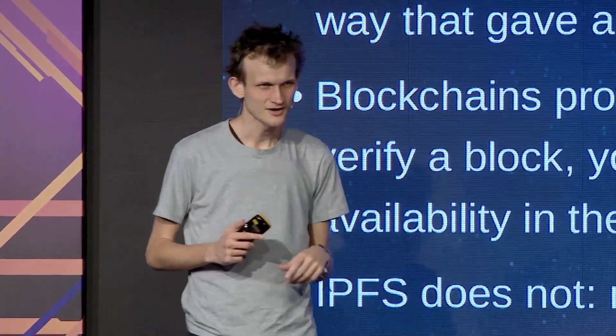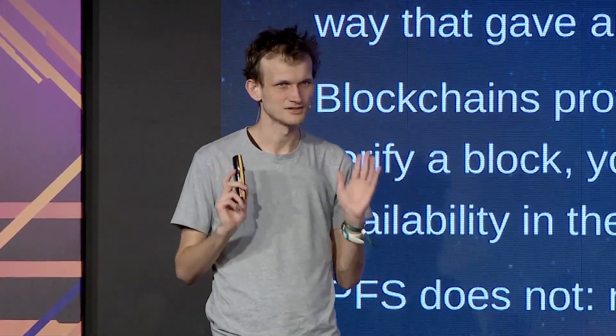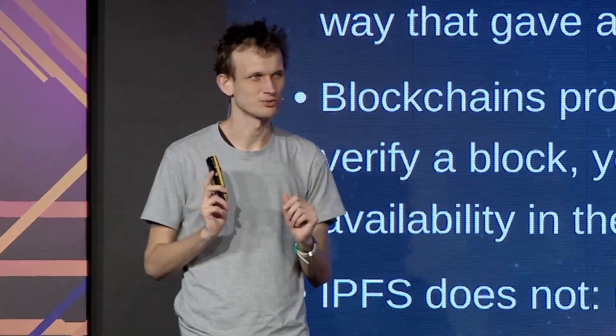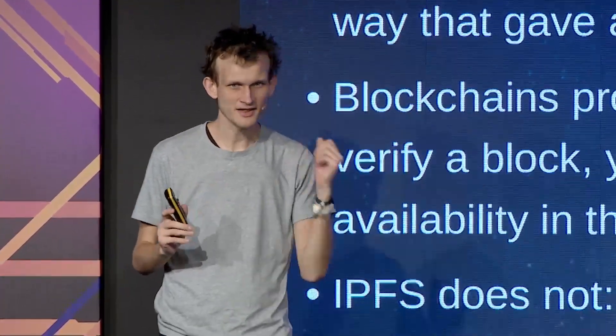In a blockchain, you download a block and then republish it. Because you've downloaded the block yourself and republished it, you know that block is available at that point in time. And because you have consensus — proof of stake, proof of work, or whatever — you also know there is consensus on the fact that that data is available.